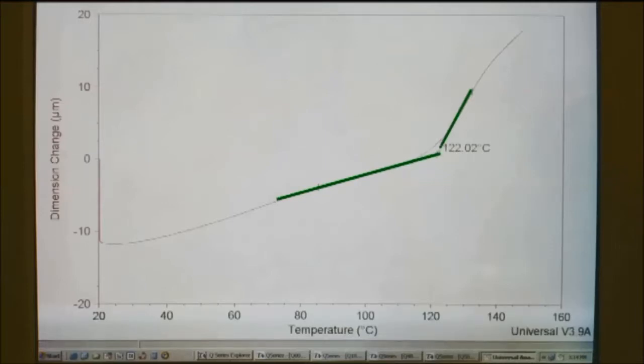The Tg is obtained from the onset value, the point of change of the slope, during the measurement of the CTE of the polymeric material.